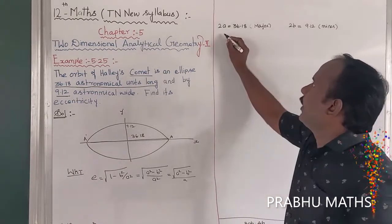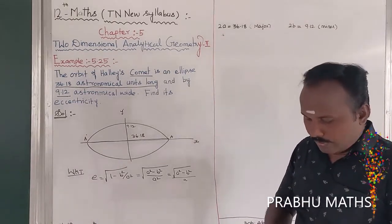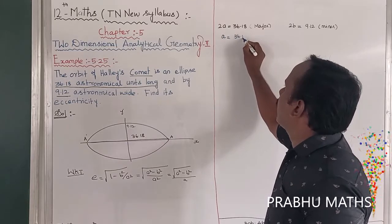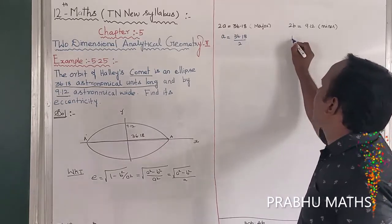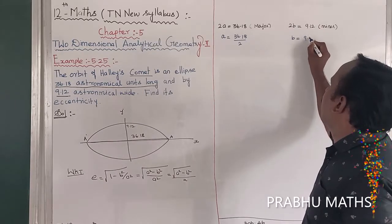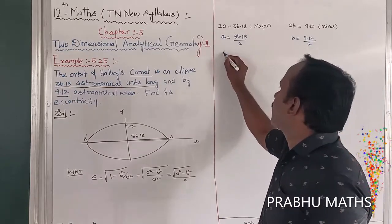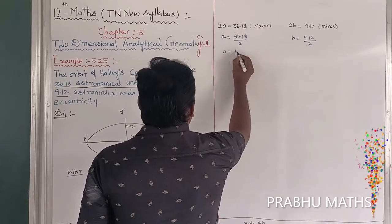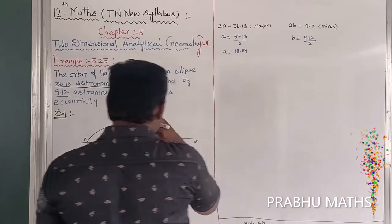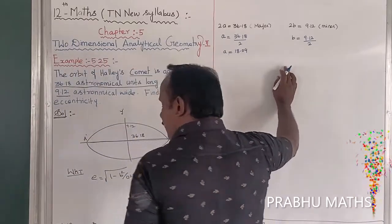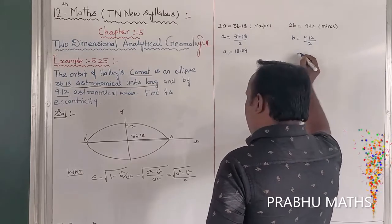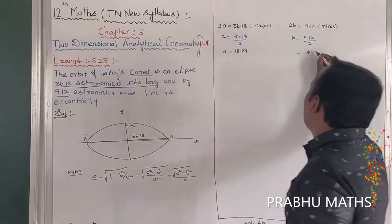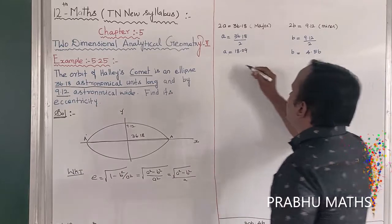To find a: a = 36.18 ÷ 2 = 18.09. To find b: b = 9.12 ÷ 2 = 4.56. So a = 18.09 and b = 4.56.